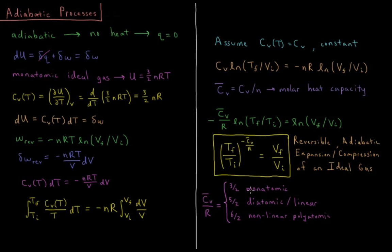The molar heat capacity changes based on the type of ideal gas. For monatomic ideal gases, which only have translational motion, statistical mechanics gives one-half RT per degree of freedom. With translation in X, Y, and Z — three degrees of freedom — Cv_bar is 3/2 R. For diatomic or linear ideal gases, there are three translations plus two rotations, giving 5/2 R. For non-linear polyatomic molecules, there are three rotations and three translations, giving 6/2 R or 3R. When using the adiabatic equation, you need to know the initial and final volumes, the initial temperature, and what kind of ideal gas you have in order to substitute the correct value for Cv_bar over R.